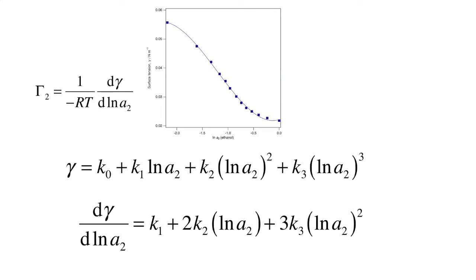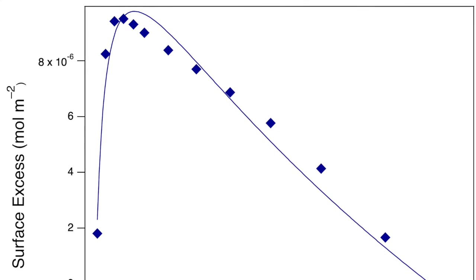And these three terms, then K1, K2, K3 are all determined by a fit to the surface tension versus natural log of the activity of ethanol from that curve up above, the fitted line. And our fit to that gives us those three coefficients so that we can analytically determine the value of the derivative for each value of mole fraction and activity and determine what the shape of the gamma 2, the surface excess versus mole fraction curve is.